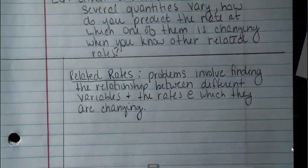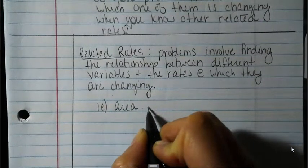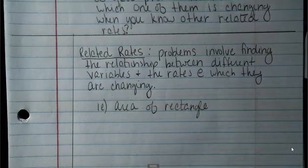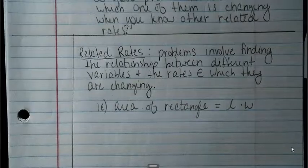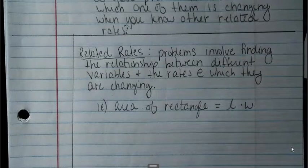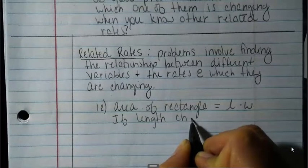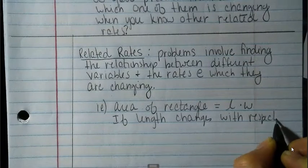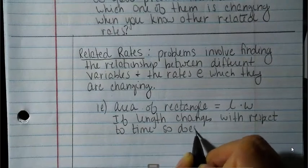For example, the area of a rectangle is length times width. So we know that if the length is changing with respect to time, so is the area. If length changes with respect to time, so does the area.